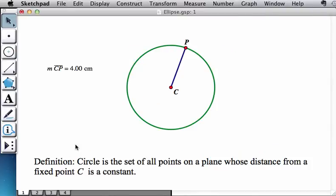We're going to start by reviewing what a circle is so we have a better understanding. You might remember that a circle is a set of all points on a plane whose distance from a fixed point, in this case C, is a constant. So it's a collection of all points on the plane that are equidistant to a central point C. As you notice, if I move point P around, the measurement here does not change. Pretty familiar, pretty intuitive.